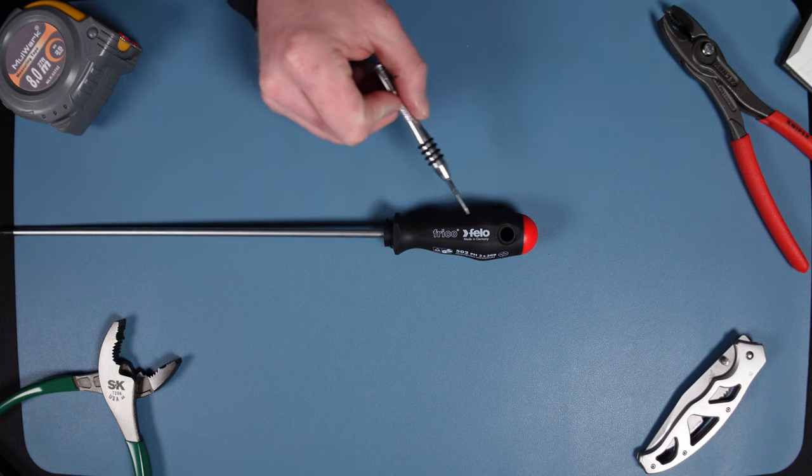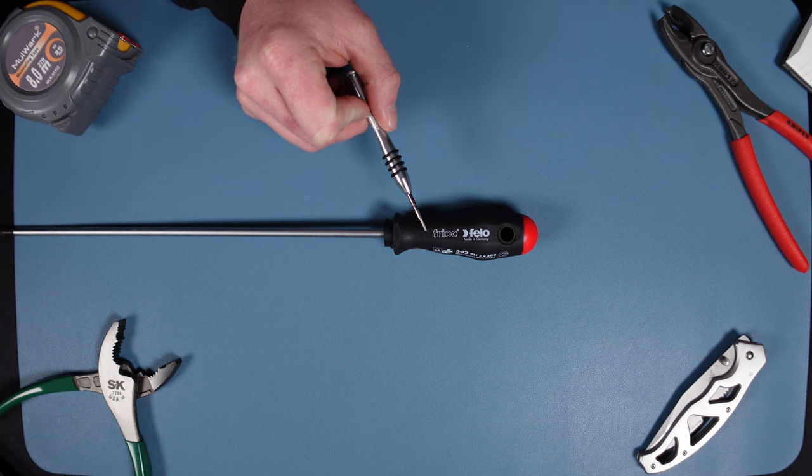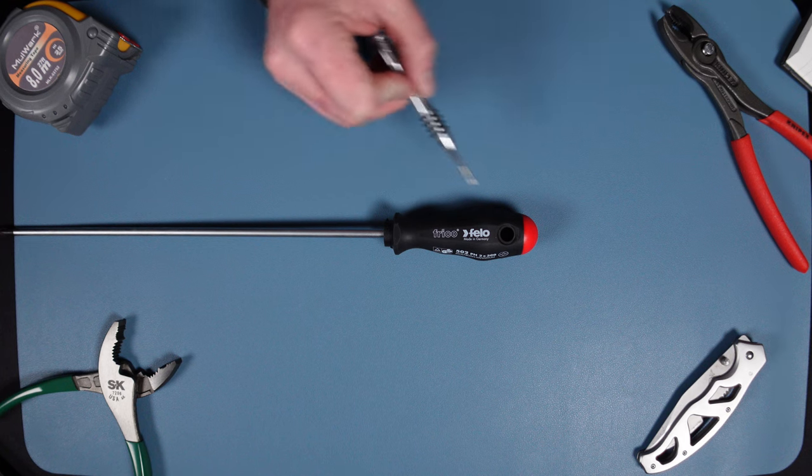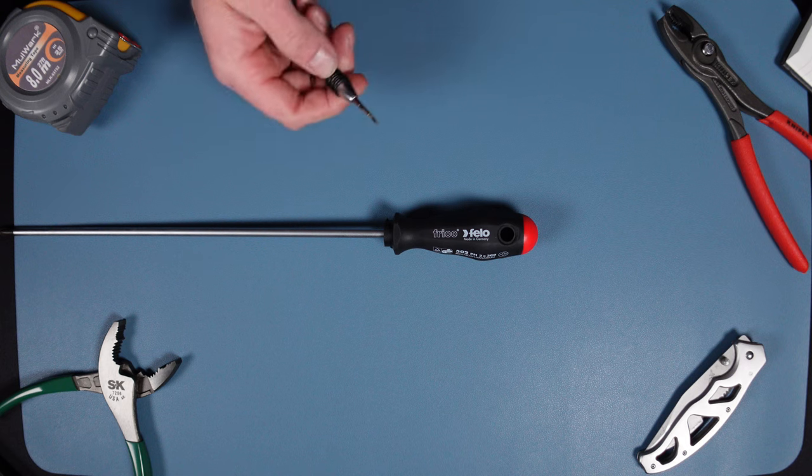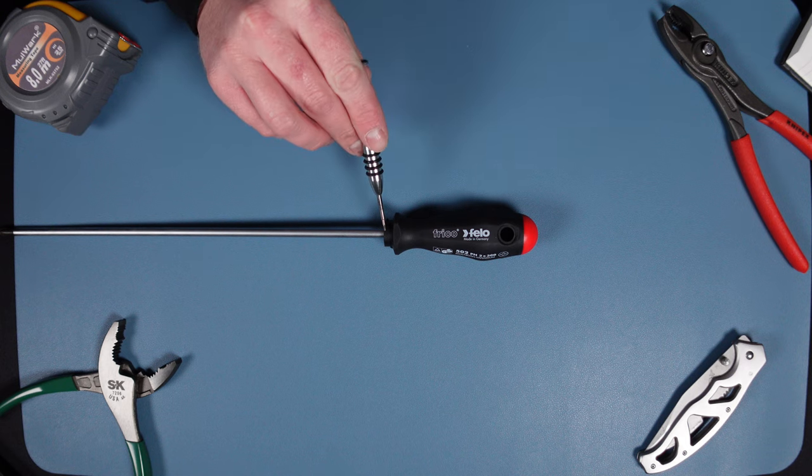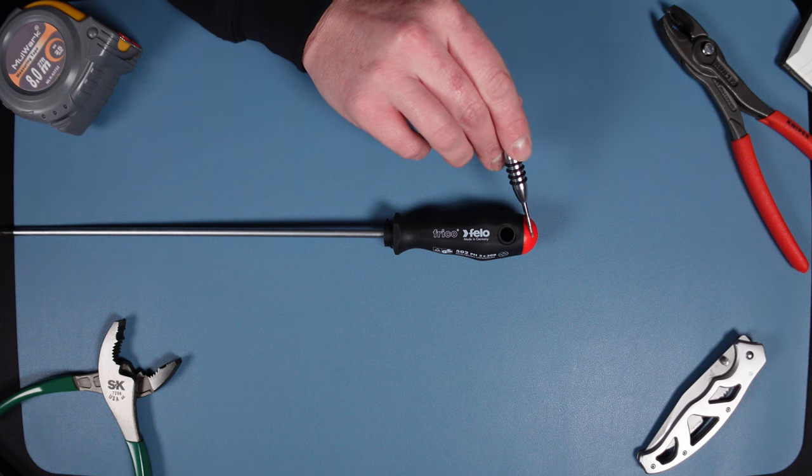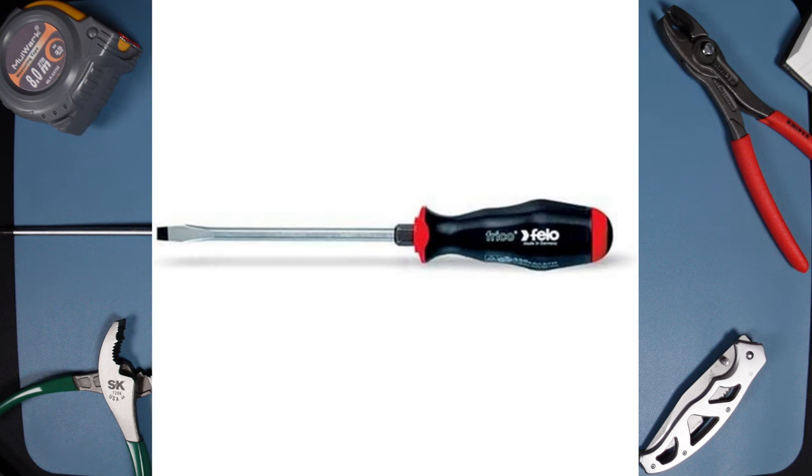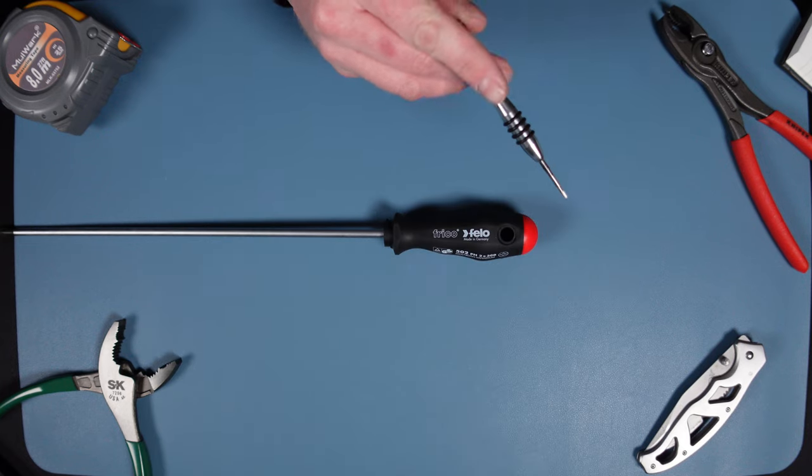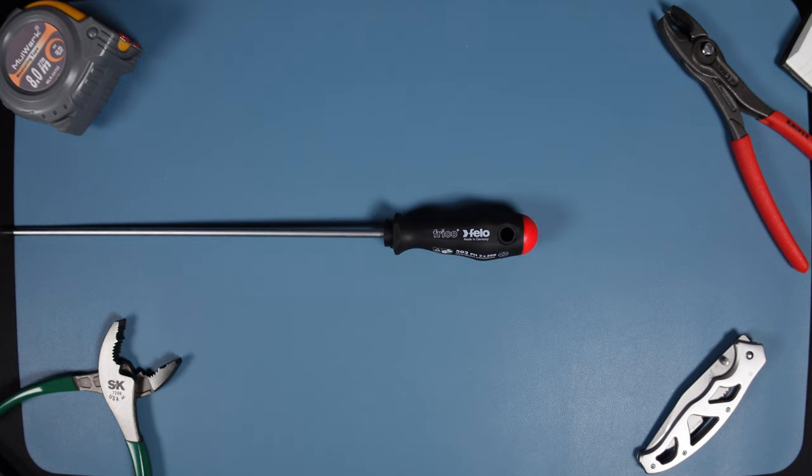This two component handle actually comes in another design as well. I have basically the base form of it right now, but you can get it with a hex bolster in place of this and you can get it with the striking cap. So a couple different variations of the two component handle and multiple different variations of the other ones we've gone over, so a lot available.